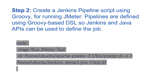Once you have Jenkins 2.0 ready, create a Jenkins pipeline script using Groovy for running JMeter. Pipelines are defined using a Groovy-based DSL, so Jenkins and Java APIs can be used to define the job. In this example, which you can see on the screen, I'm running a JMeter script called jenkins_demo1.jmx.